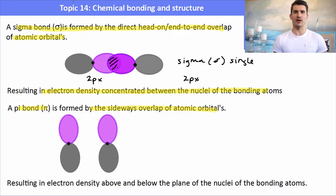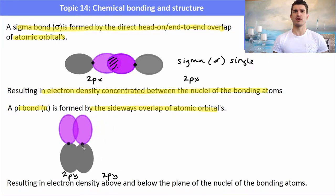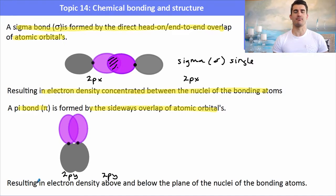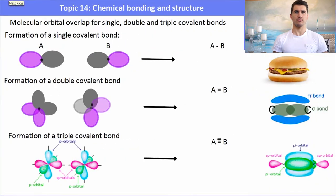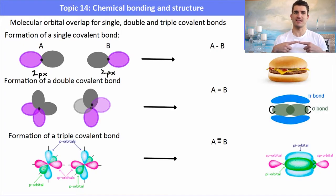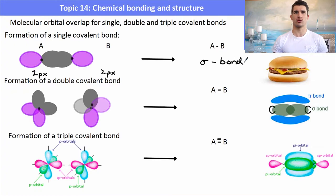A pi bond is formed by sideways overlapping of the atomic orbitals. We could have two 2PY orbitals that get close enough together so that the orbitals overlap both above and below the plane of the nuclei. It's called sideways overlap of the orbitals. When we have sideways overlap, this results in a pi bond. A pi bond is a double covalent bond. For a pi bond to occur, we need to have the end-on-end sigma first, and then the sideways overlap for the pi bond. So for a single covalent bond, we have two 2PX orbitals coming together end-on-end to form a sigma bond.